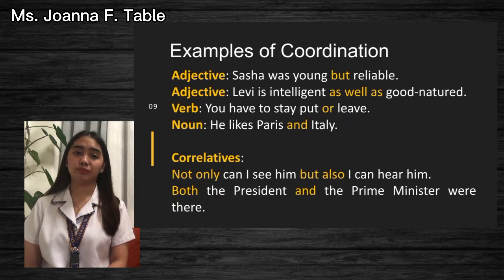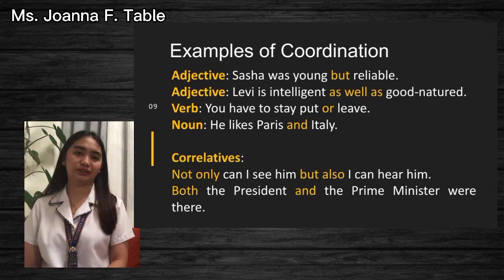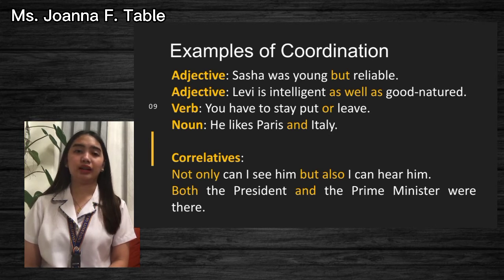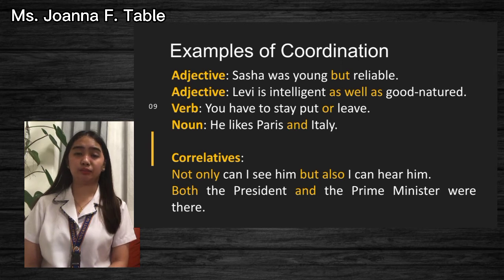Before ending the discussion, here are additional examples of coordination using adjectives, verbs, and nouns, along with two more correlative examples. Adjectives: 'Sasha was young but reliable,' and 'Levi is intelligent as well as good-natured.' Verb example: 'You have to stay put or leave.' Noun example: 'He likes Paris and Italy.' Correlatives: 'Not only can I see him, but also I can hear him,' and 'Both the president and the prime minister were there.'